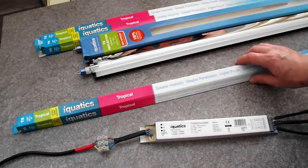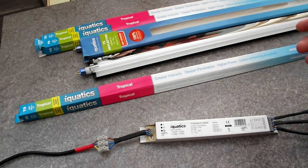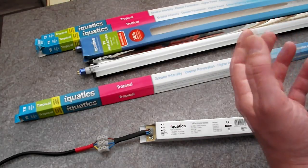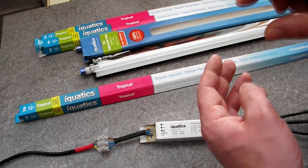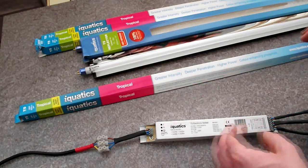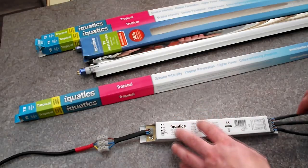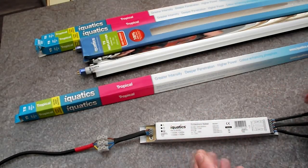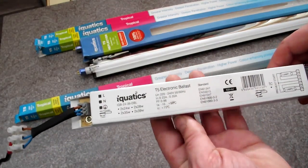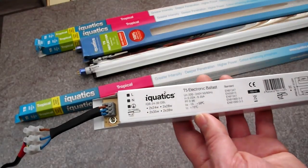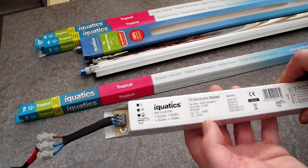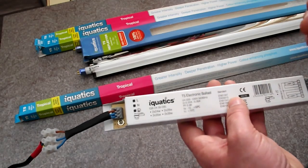But along with the high output T5 tubes, you need to have the ballast to go with it. I'm sure a lot of you, like me, use the T8 ballast that's got a starter screwed into it and your lights will flicker for a bit and then they'll come on. Well, with this T5 system, the lights will come on instantly. There's no starter to mess about with. It's just the ballast. They connect up differently to the T8 tubes.